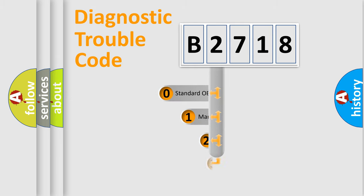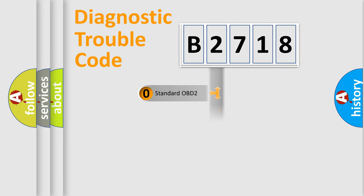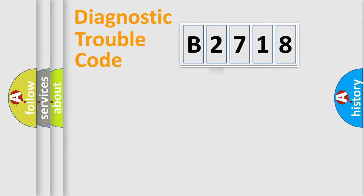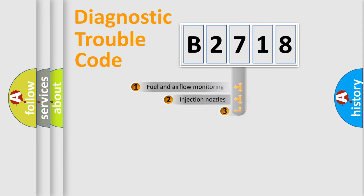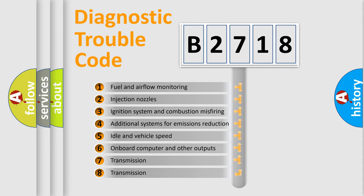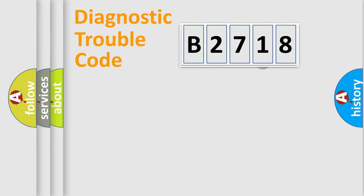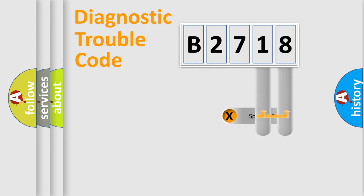This distribution is defined in the first character of the code. If the second character is expressed as zero, it is a standardized error. In the case of numbers 1, 2, or 3, it is a more specific expression of a car-specific error. The third character specifies a subset of errors. This distribution is valid only for the standardized DTC code.